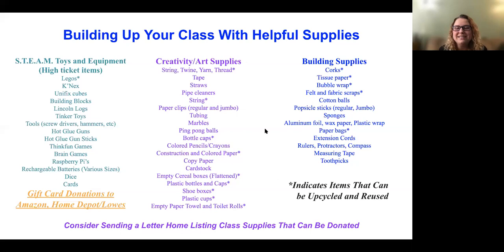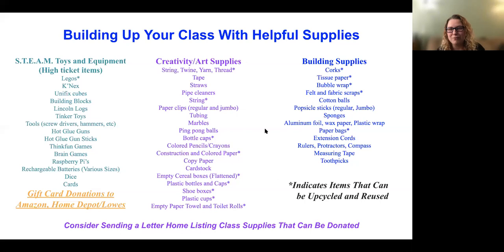You can set up a letter to parents asking for donations, but I'd always recommend getting it approved by your building principal first, to make sure you're not violating any policies. Kids can bring in paper towel rolls instead of throwing them away, old tissue paper, bubble wrap, or Amazon boxes. You can recycle those within your classroom as building supplies and creativity supplies for designing projects. On the left of the list are the high-ticket STEAM toys and equipment — things like Raspberry Pi for circuitry and programming, hot glue guns, rechargeable batteries, dice, and cards.